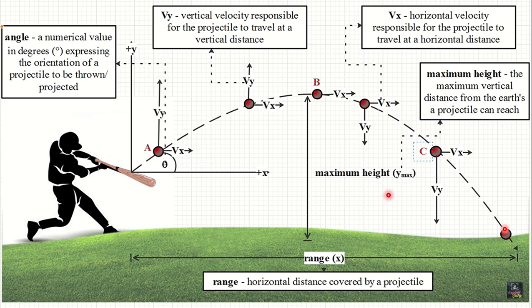You could say that this is a projectile. You could also see that the motion of this object is not merely linear or straight ahead — going forward or sidewards — but it also moves upward. So it has two motions: horizontal and vertical motion. This tells us that this object is experiencing projectile motion.